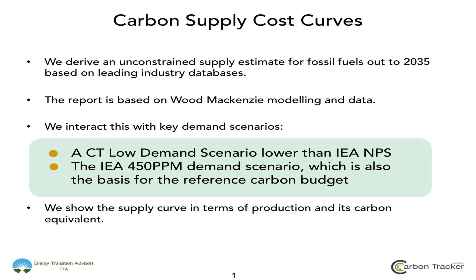Looking at slide one, the first thing we do is derive an unconstrained supply estimate for fossil fuels out to 2035, which is based on leading industry databases. For natural gas, we have used Wood Mackenzie's global economic model. We then interact this supply curve with key demand scenarios. We have a low demand scenario estimated by Carbon Tracker, which tends to be lower than the IEA new policy scenario, taking a tougher view of what might occur. For the IEA 450 parts per million demand scenario, we also use a reference carbon budget based on current shares of fossil fuels in the energy mix. These two combined give us a feeling for sustainable demand to achieve a two-degree outcome.